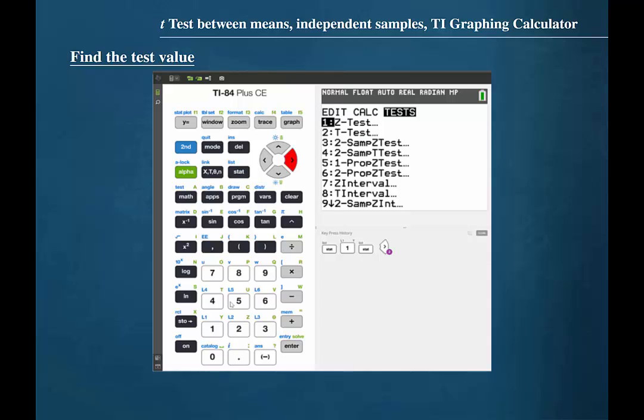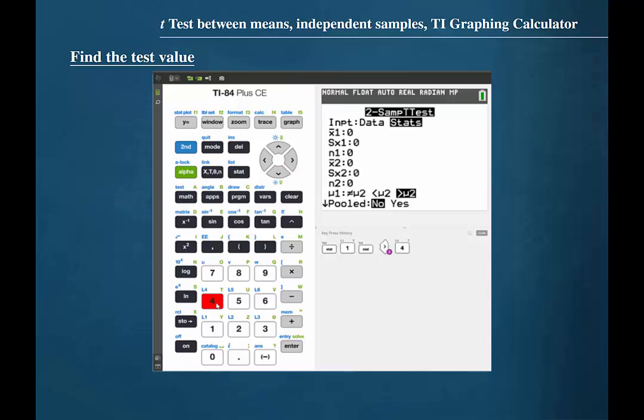We are conducting a two-sample t-test, so we should press 4. We have data values in lists, so we should highlight data using the cursor and press enter. Make sure that list 1 and list 2 are set to reference the lists for your group 1 and 2 datasets. Leave the Frequency 1 and Frequency 2 entries set to 1.